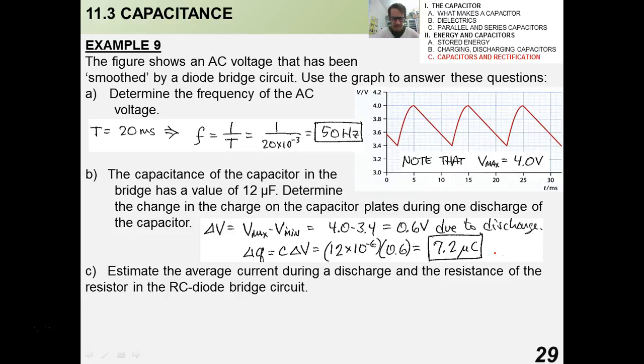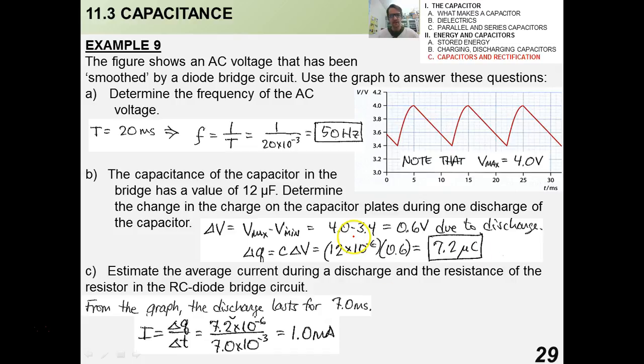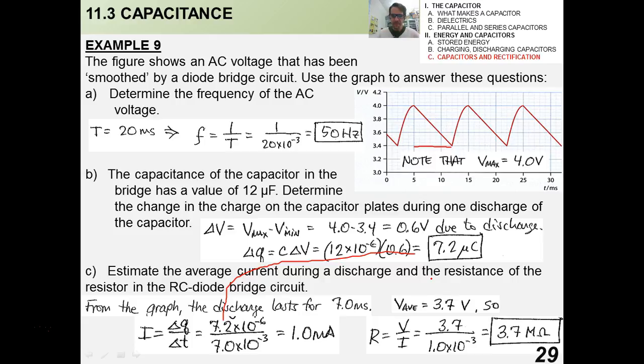And finally, for part C, estimate the average current during a discharge and the resistance of the resistor in the RC diode bridge circuit. So from the graph, you can see that the discharge lasts for about 7 milliseconds. So it's going from 4 volts to 3.4 volts. How long does that last? It's about 7 milliseconds. All right, so I would be delta Q over delta T. We'd use the same delta Q that we used from before, delta T, 1.0 milliamps. Now, the average voltage is 3.7, right? Because 3.4 to 4.0, so therefore, R is V over I, which is 3.7 volts, all over the average current, which is 1 times 10 to the minus 3, I just found here. And I get that the resistor is 3.7 megaohms.